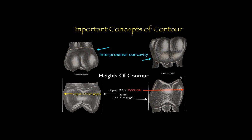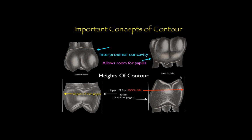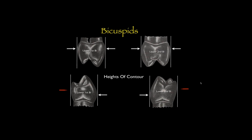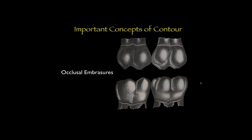Something I see missed a lot in the design of posterior teeth is respecting the interproximal concavity that occurs on the mesial and distal of these teeth. It's absolutely essential that we respect this to allow room for the papilla and not impinge on the tissue. I chose these specific aspects of contour because I see these violated quite often. Bicuspids and all posterior teeth share the same position of heights of contour, all in the gingival one-third with the exception of the lingual cusp of all lower posterior teeth, which is one-third of the way down from the occlusal table.